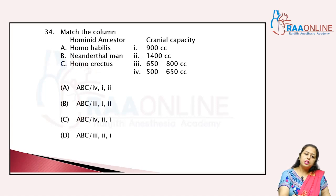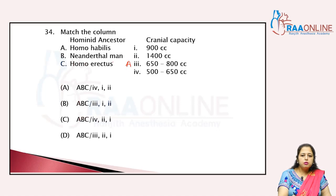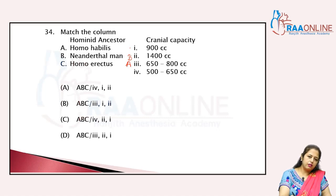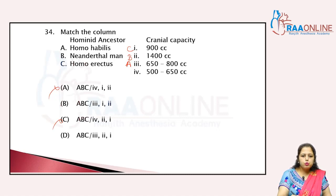Match the column — hominid ancestors and cranial capacity. Homo habilis: 650 to 800 cc — A3. Neanderthal man: on average 1400 cc — B. Homo erectus: 900 cc — C1. The answer is A3, B2 — answer is D.